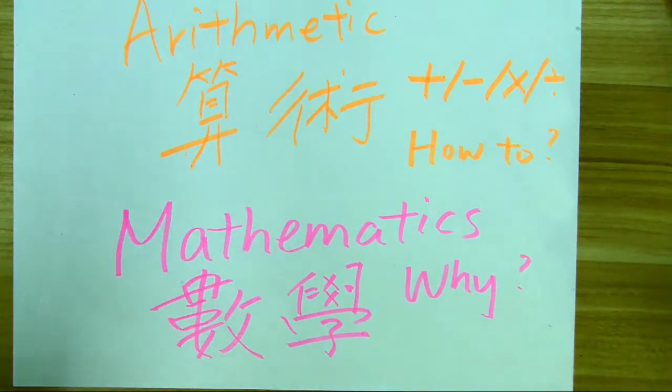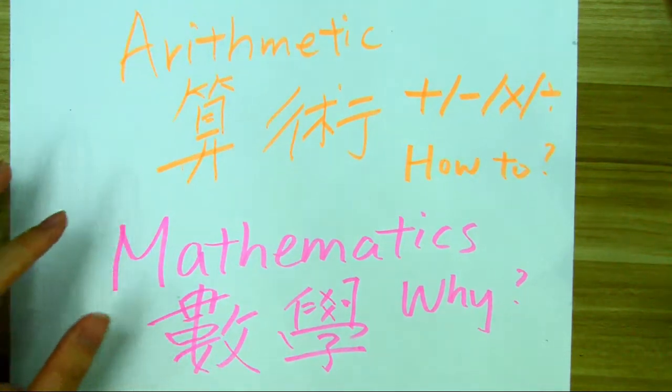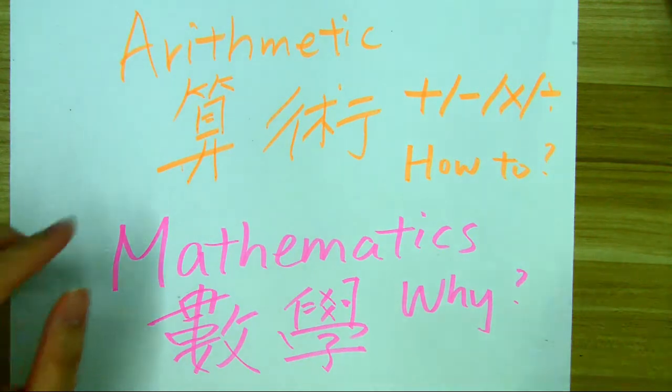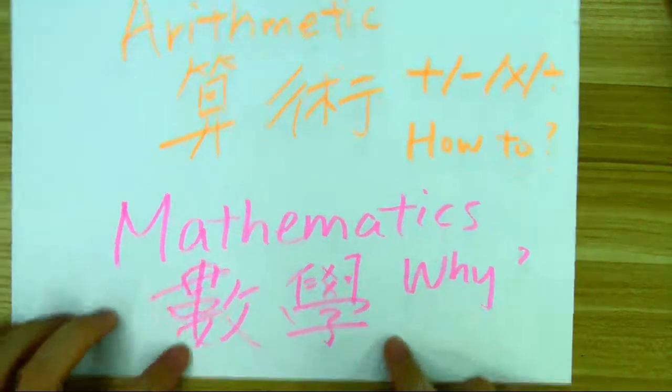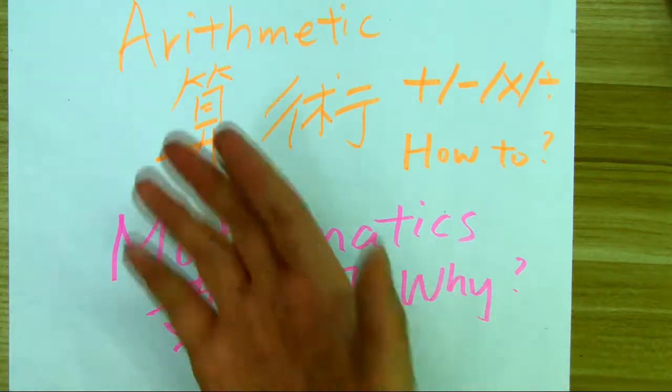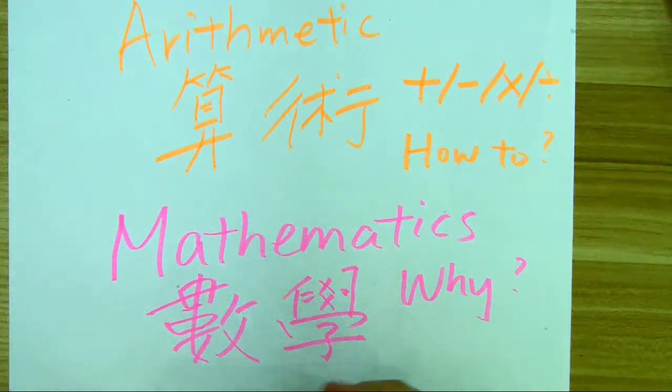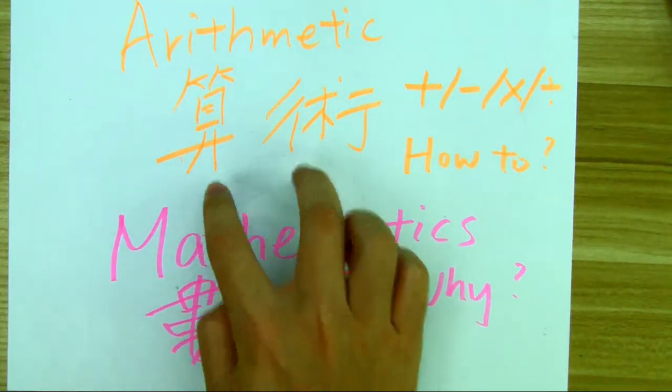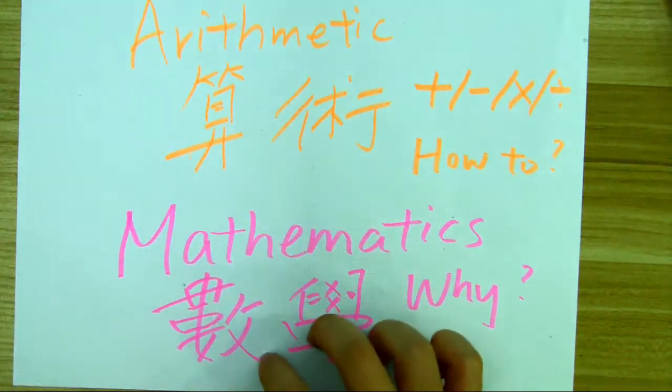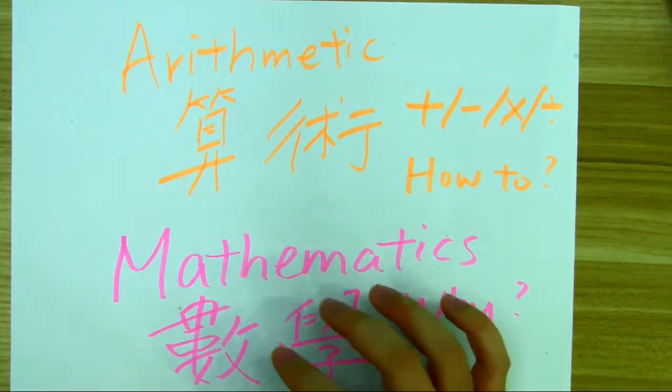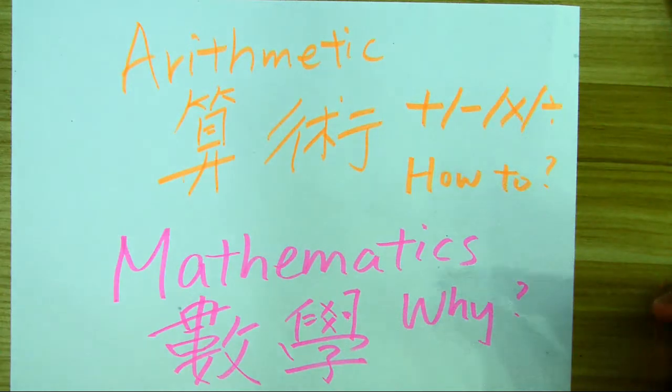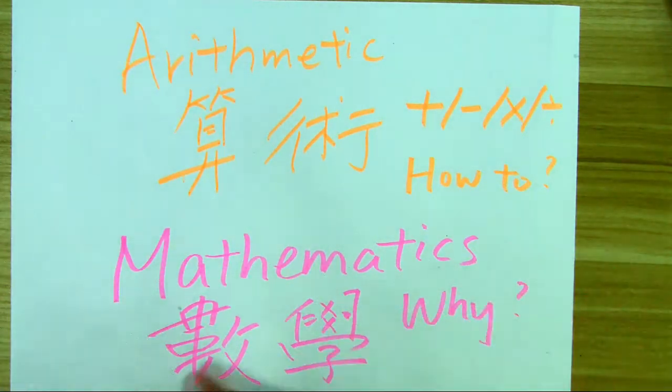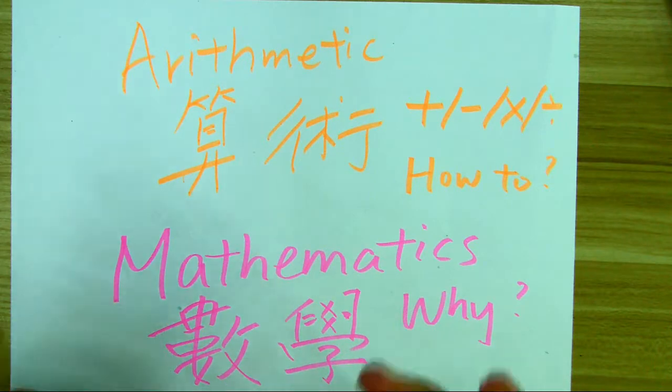But the real math addresses those why questions. So it needs more rigorous proofs. That's the differences between arithmetic and math. And of course, there's the words shuan shu and shu xue. In Cantonese, it's like sunsot sou hong. And in Japanese, they have this divided into two categories. But actually, many Asians don't really know the differences between arithmetic and mathematics. So many of them just know, oh, I'm good in mathematics. But actually, they are good in arithmetic.